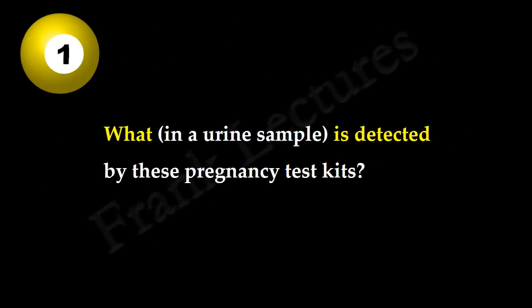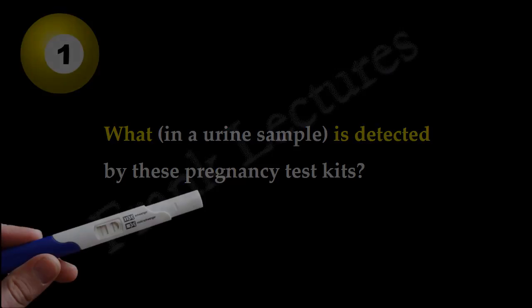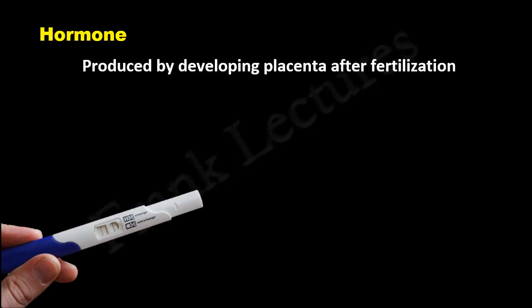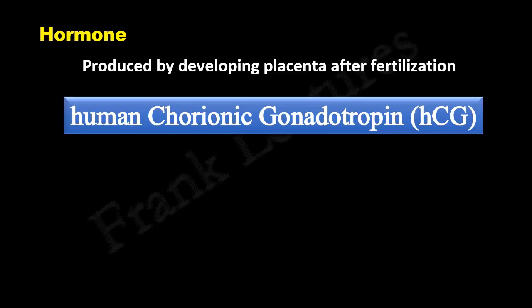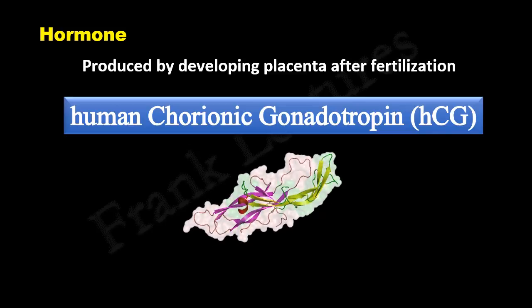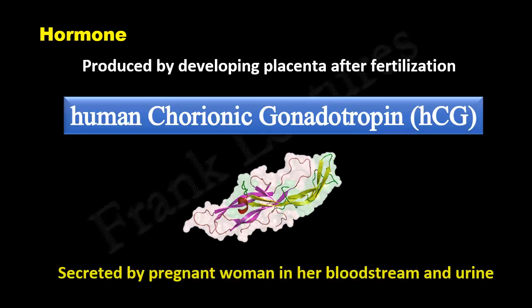First, we will find out what in a urine sample is actually detected by the pregnancy strips. Pregnancy test kits detect and confirm the presence or absence of a hormone. This hormone is produced by the developing placenta after fertilization. It is known as human chorionic gonadotropin, abbreviated as HCG. It is secreted by a pregnant woman in her bloodstream and urine.